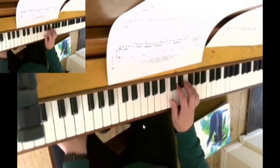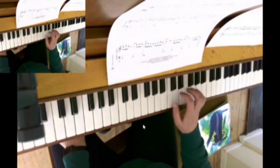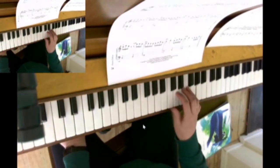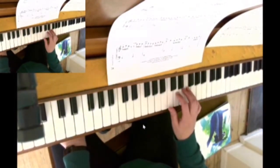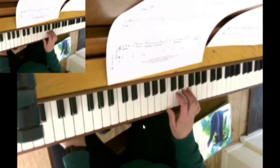So the right hand then starts on middle C, and we've got our fingers in the C hand position. That's our thumb on C, second finger D, third finger E, fourth finger F, little finger G.